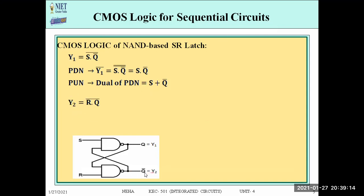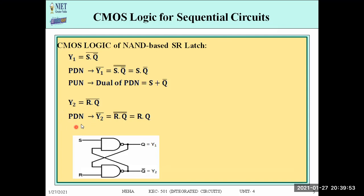For Y2: Y2 is the output of the second gate with inputs R and Q, so Y2 = R·Q whole bar. For the PDN, we complement Y2 to get R·Q, so R and Q are in series. For the pull-up network, the dual of PDN gives R + Q — R and Q in parallel. We now have both outputs Y1 and Y2 with their PDN and PUN calculated.